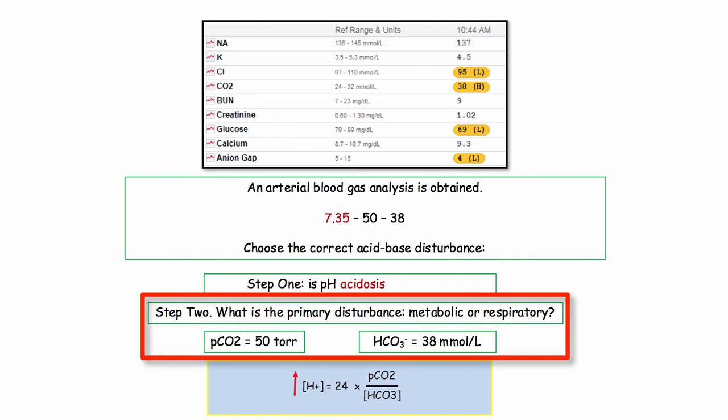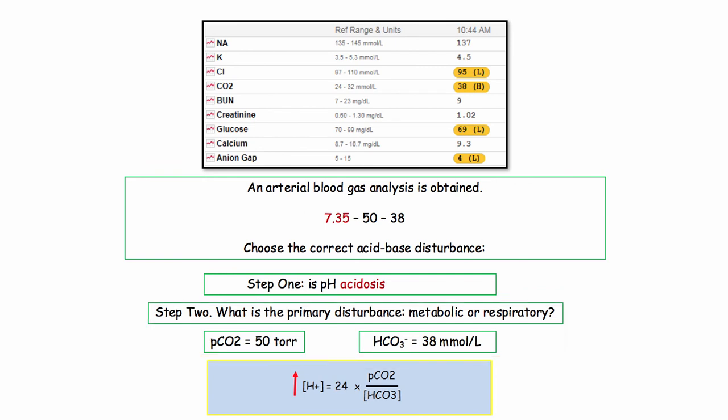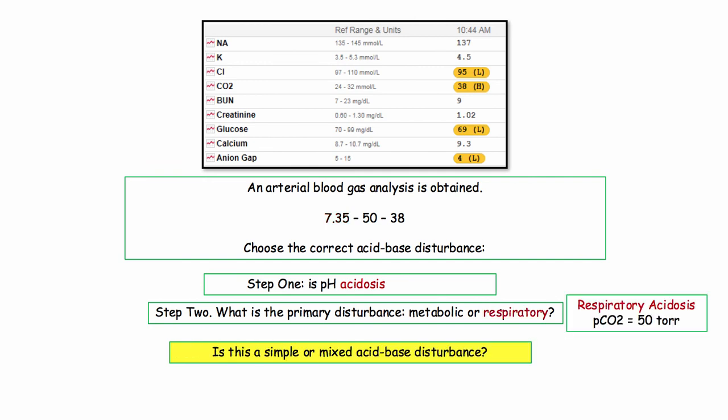Step two is to determine the primary disturbance. Which of the two elevated values, the pCO2 of 50 or the bicarb of 38, will cause an acidotic state? I again show the modified Henderson-Hasselbalch equation. We are asked which of the two choices will raise the hydrogen ion concentration. The answer is obvious, the pCO2. So to answer the question, which is the primary disturbance, the answer is respiratory acidosis.